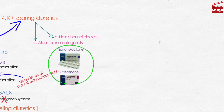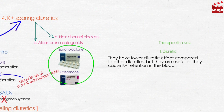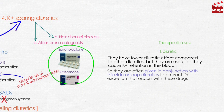They have a lower diuretic effect compared to other diuretics, but they are useful as they cause potassium retention in the blood. So they are often given in conjunction with thiazide or loop diuretics to prevent potassium excretion that occurs with those drugs.